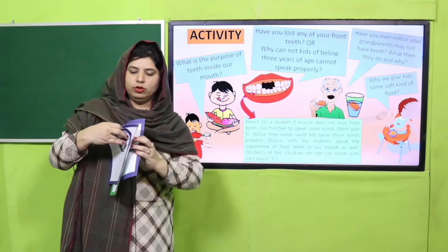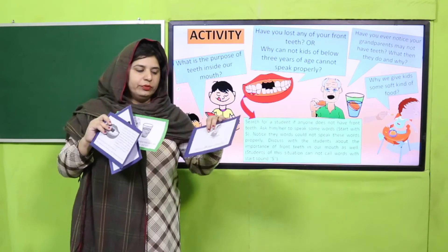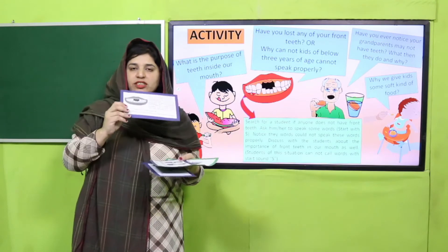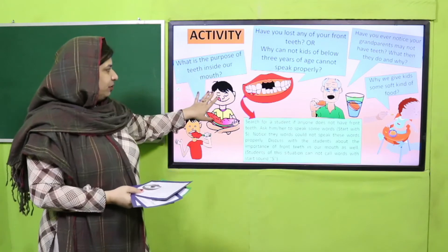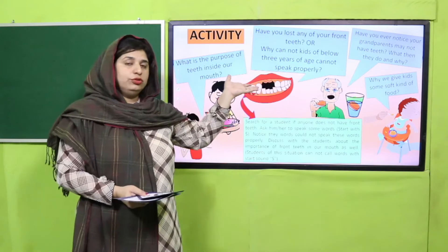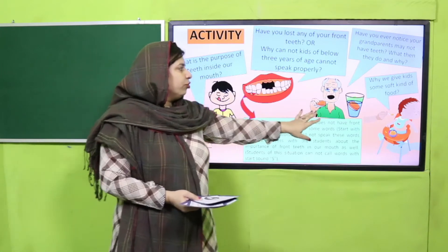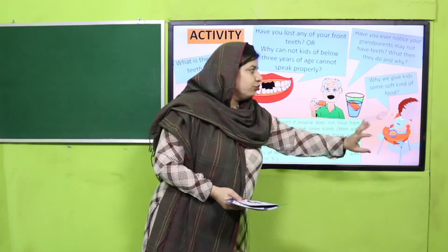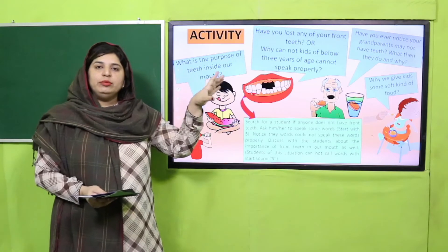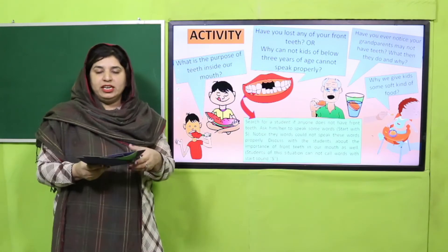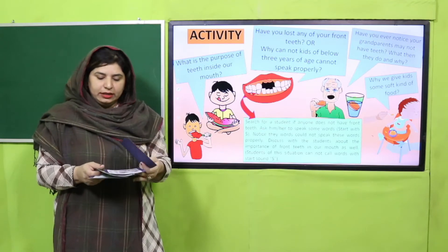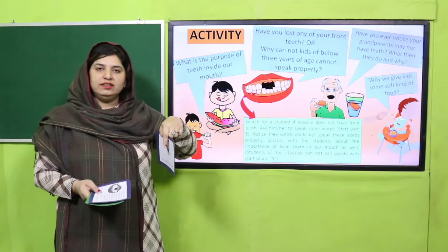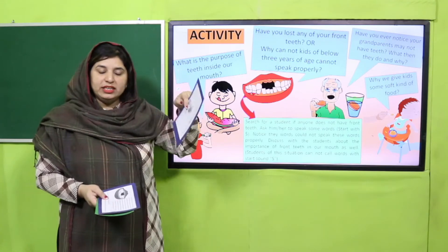Give this flash card to each group, or you can repeat these cards if the number of students is more. Ask them to discuss the question in front of the class. Children will discuss: teeth help us with food; some worms don't have teeth so they face problems; if our elders don't have teeth, do they feel difficulty in their daily needs? Also, why do we give soft food to young children? All of these questions will help students observe the importance of teeth in our mouth cavity and daily eating habits. Then call children in front of the class, and each group will represent the importance of teeth in their life.